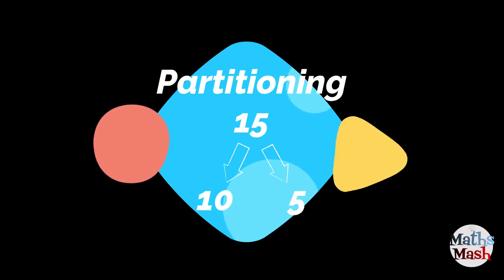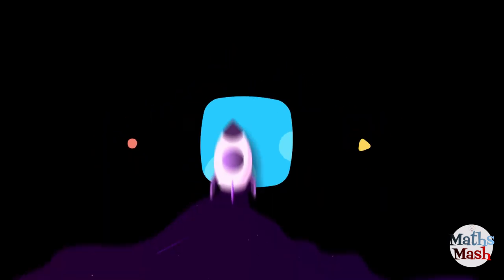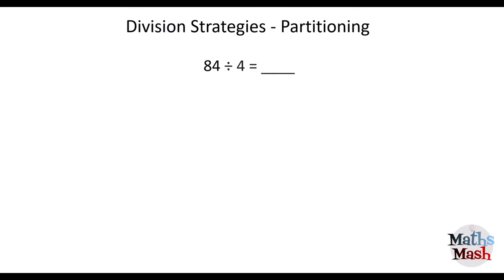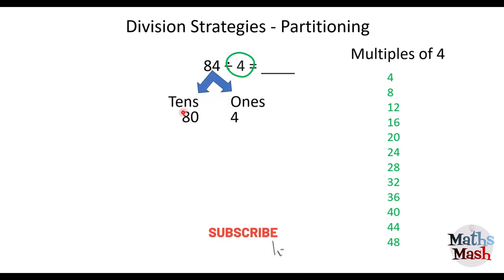All right, partitioning is when we take a number and we break it up into two parts. And our first example question, 84 divided by 4. Okay, so since we're looking at dividing by 4, we should write the multiples of 4 down the side. And I'm going to partition 84 into tens and ones.